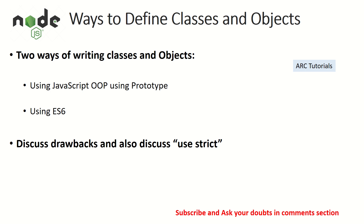I'm going to show both methods of writing classes and objects because it's important to understand code that others have written, especially in larger projects. We'll also talk about some of the drawbacks and how to use the 'use strict' directive — how to avoid errors and how it helps us.